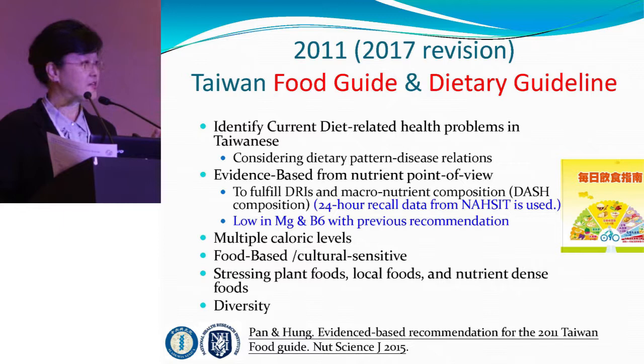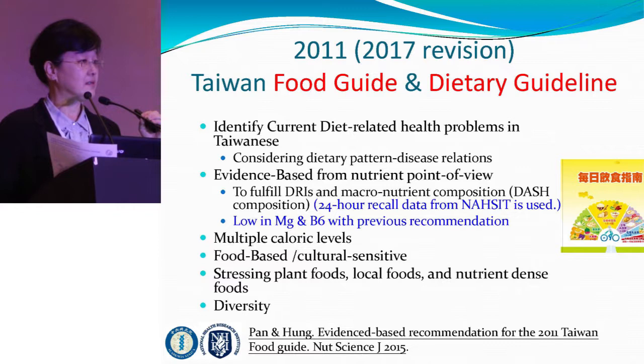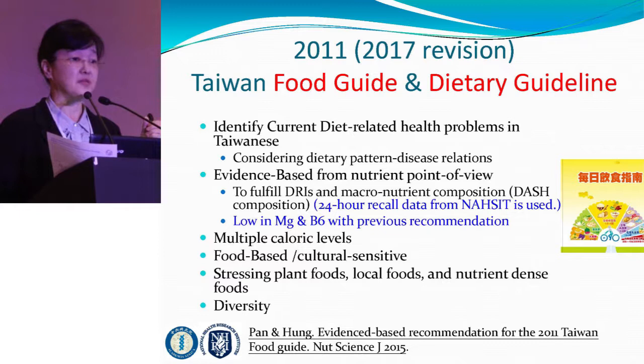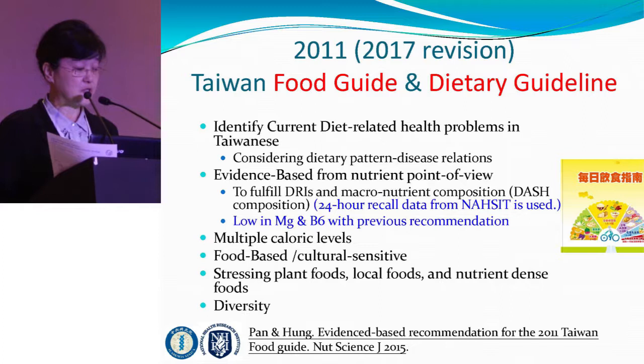This slide briefly describes how we established these guidelines. We first identified current diet and related health problems in Taiwan, which is metabolic syndrome. Even though the obesity rate in Taiwan is not very high compared to many Asian countries, we are more susceptible to metabolic diseases like diabetes — we have a much higher prevalence of diabetes than many Western countries. So we did very careful calculations using the nutrient health survey data in Taiwan to generate the distribution of food groups.